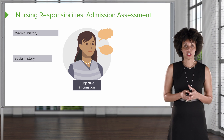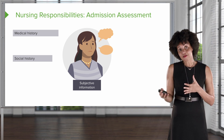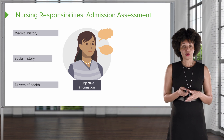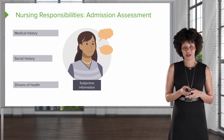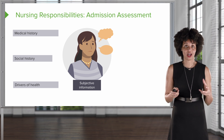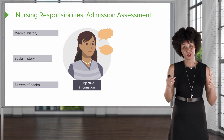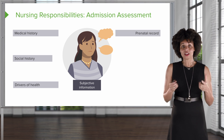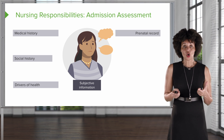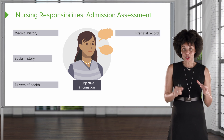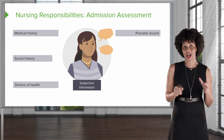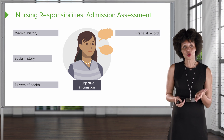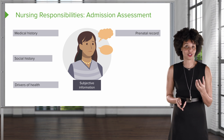What about their social history? Are they married, not married, divorced? Whom do they live with? Who is in their support circle? We want to talk about drivers of health because social drivers and other types of drivers really can determine someone's experience in labor and what happens afterwards. We also want to make sure we're reviewing the prenatal record so we know what happened during their antepartum course.